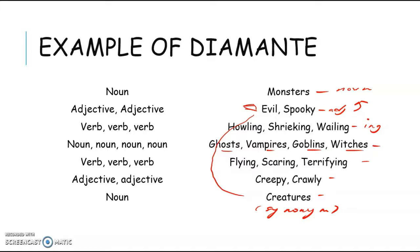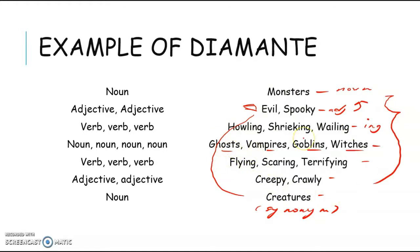So when we are talking about monsters, all these words come to your mind: evil, spooky, howling, shrieking, wailing, ghosts, and all of this. This means Diamante is a good approach for you to actually add to your vocabulary.